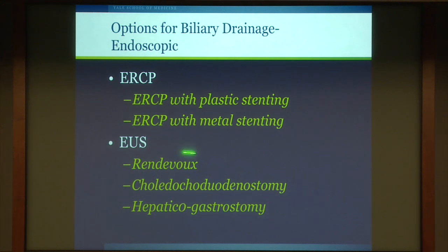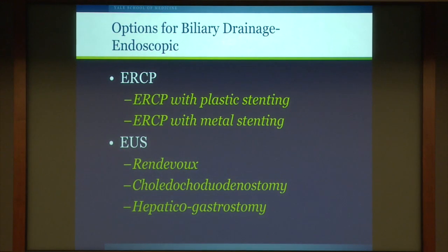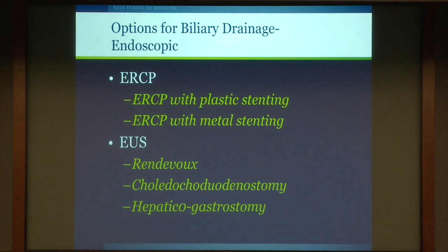More recently, we are in the era of therapeutic endoscopic ultrasound. There are various ways EUS can accomplish biliary drainage: a rendezvous maneuver; a choledochoduodenostomy where the bile duct is punctured using an EUS needle and a metal stent is placed between the bile duct and the duodenum — this works well in patients with gastric outlet obstruction where the duodenum is obstructed and you can't reach the papilla of Vater for ERCP. You can also fashion a hepaticogastrostomy to drain the left intrahepatic ductal system into the stomach.